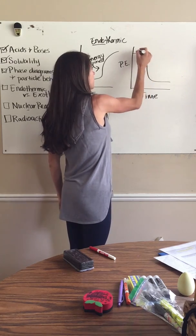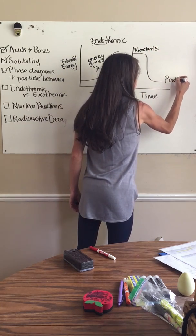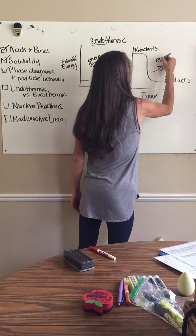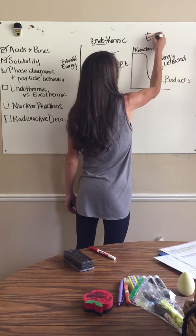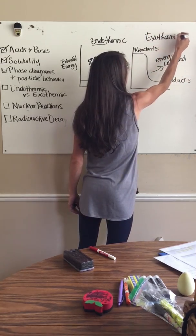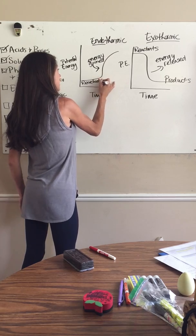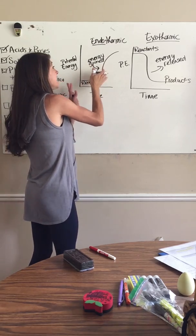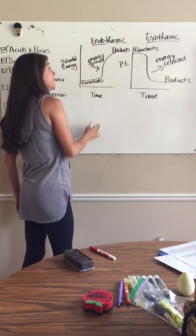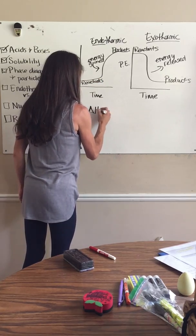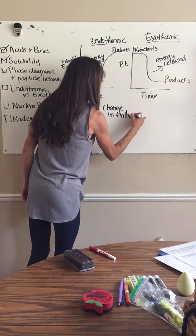For exothermic: at the beginning of the reaction the reactants have high energy, but then it drops down once we get to the products, because energy exits — energy is lost, released. Exo — think energy exits. In an endothermic reaction the reactants have low potential energy; they need more energy to actually build up the bonds for the products they're creating, so they have to gain energy. That is why delta H — called your change in enthalpy — represents the change in your heat energy.